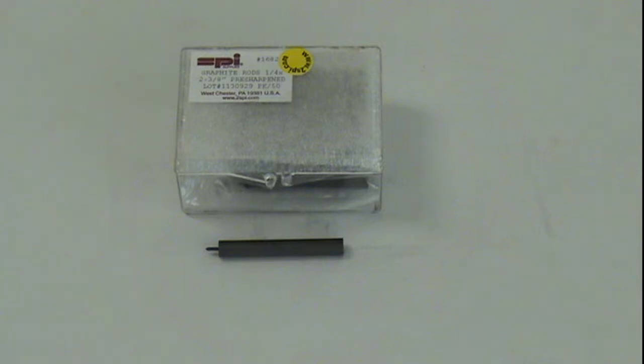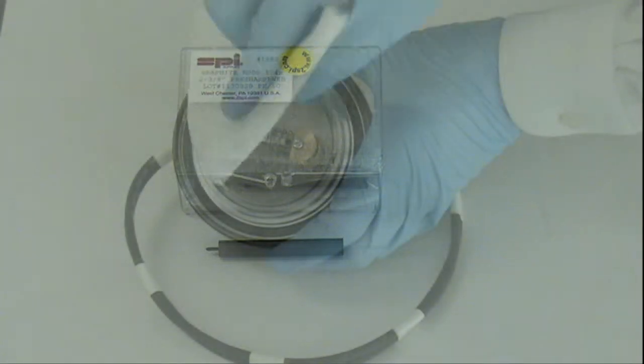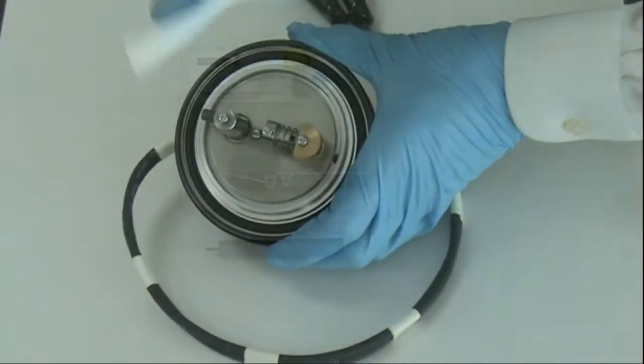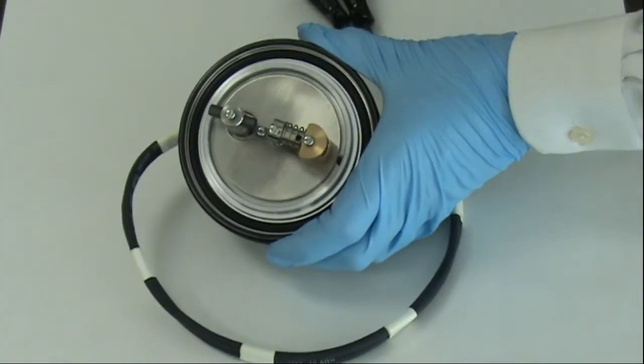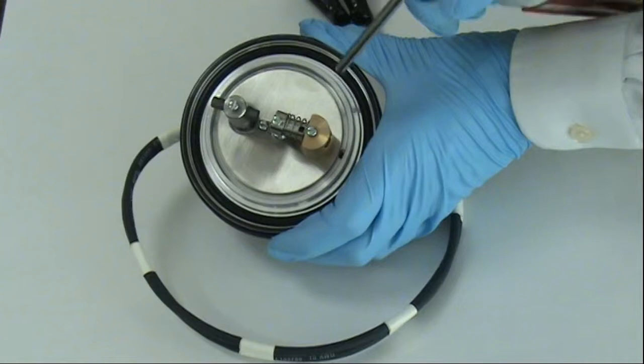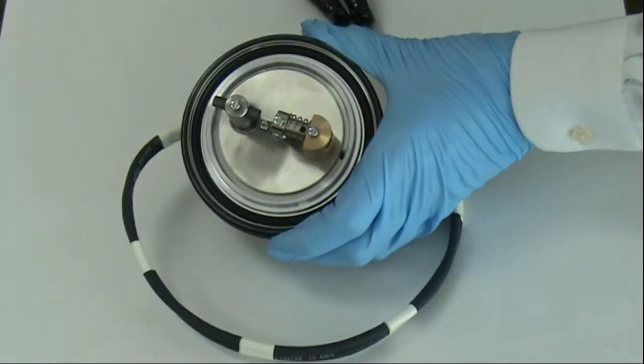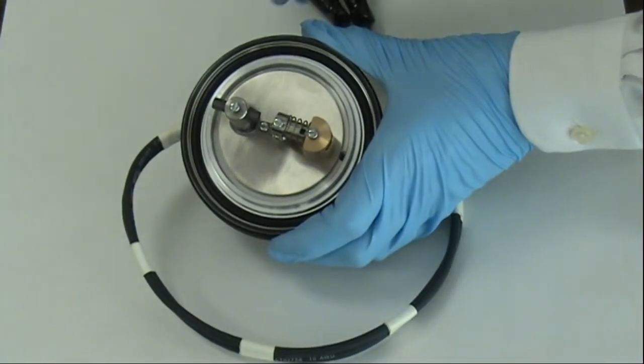While a full cleaning of the head between runs is not necessary, cleaning off any loose material will ensure that the next run will not be contaminated. Use an SPI Supplies easy duster and lint-free cloths to clean off the posts and shield.